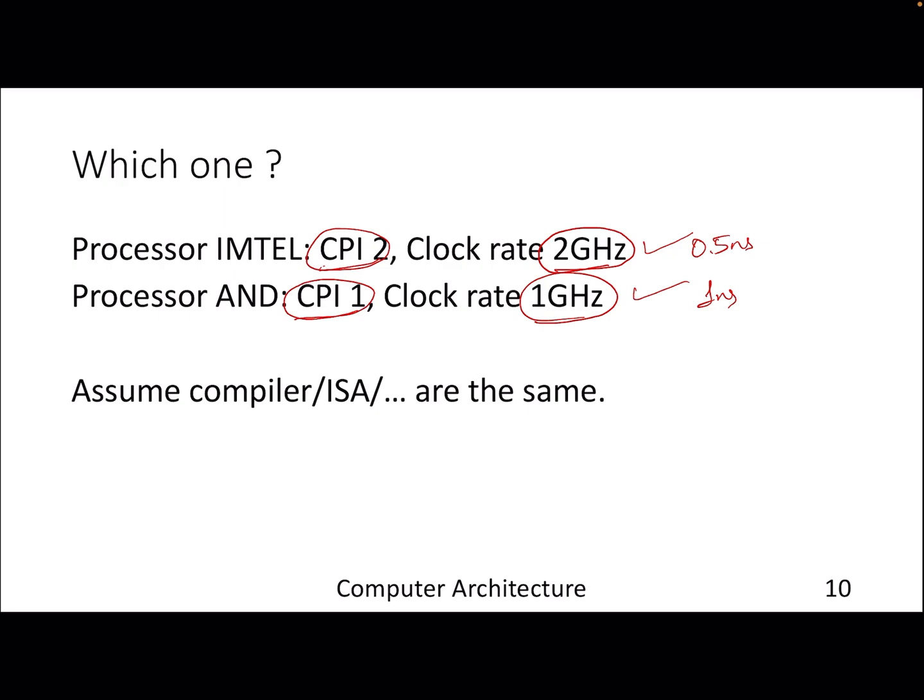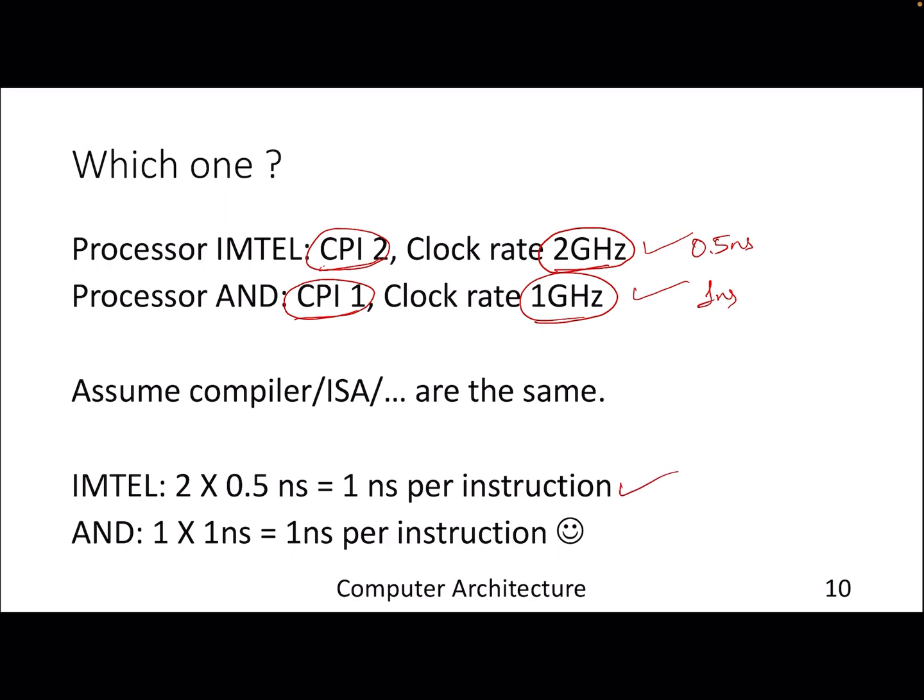Now assuming the role of compiler and everything is the same, which machine will you prefer? As is obvious and pretty intuitive, you can see that both machines are providing a performance of one nanosecond per instruction. The key here is if some processor is claiming high frequency, that doesn't mean it will provide high performance. You have to look at both frequency and the CPI, assuming rest of the things are the same that are not in our control. As an architect you have to look at the cycle per instruction along with the frequency to decide which processor is doing good.